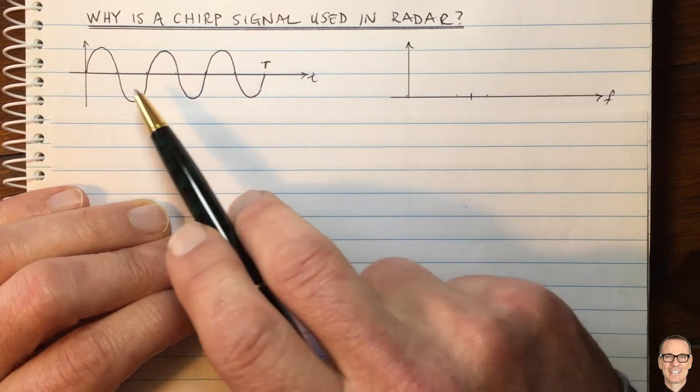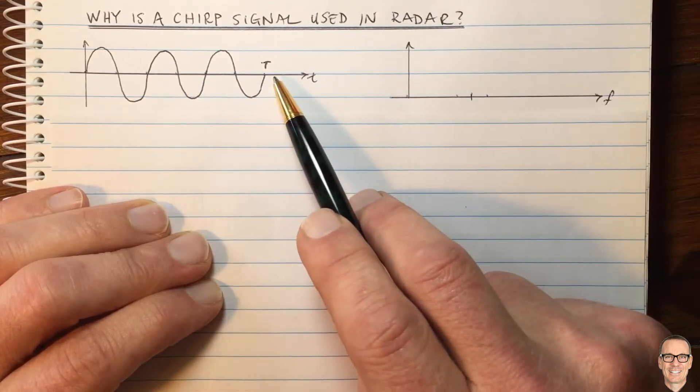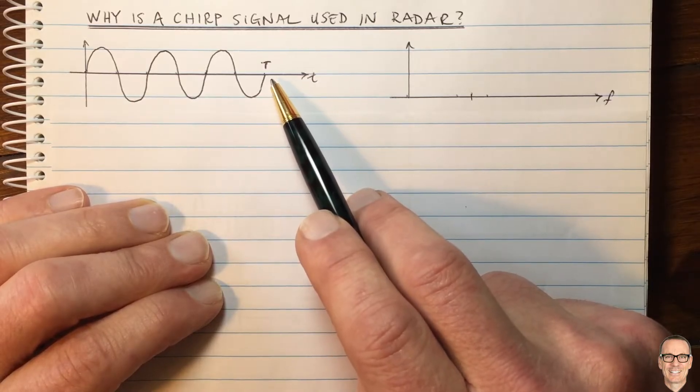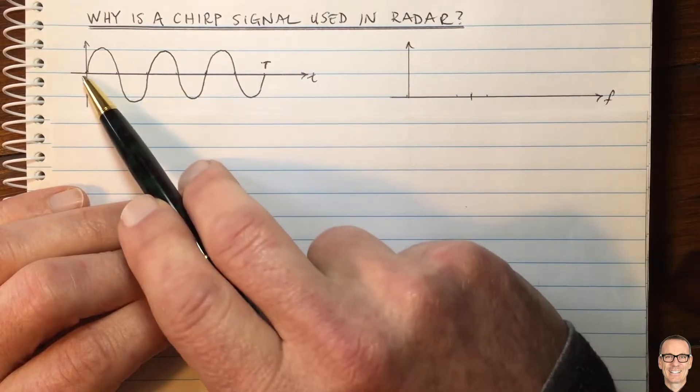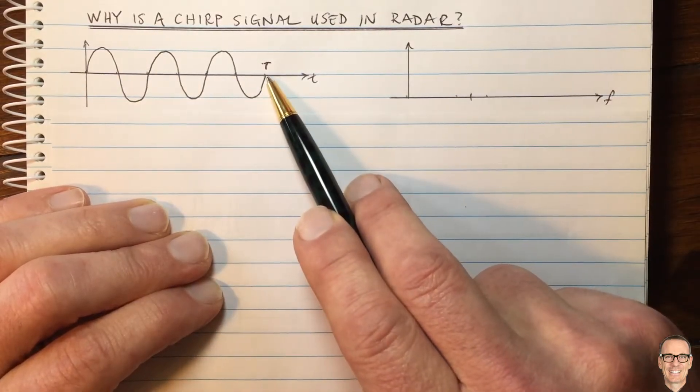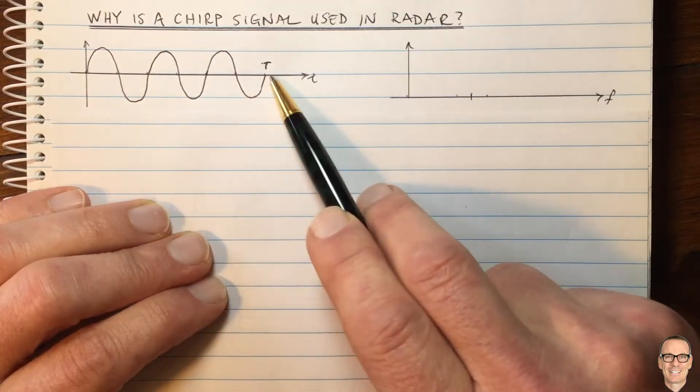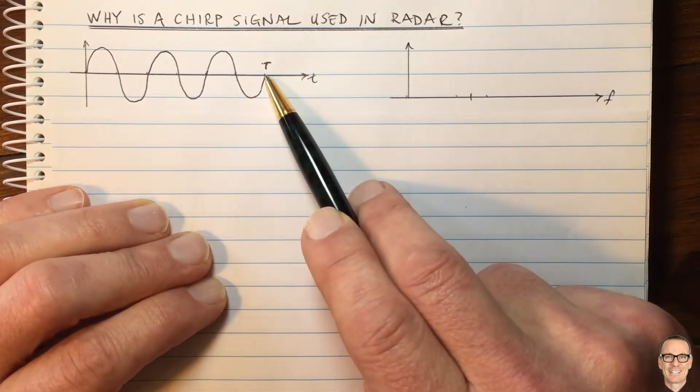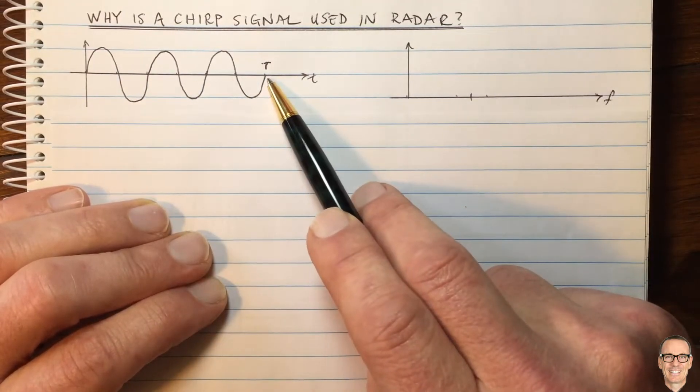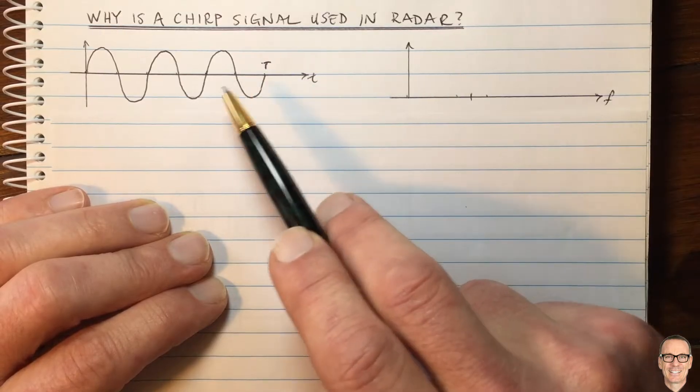It's also difficult if there is a distributed target with a number of reflection points off the target, so not just one reflection point. And also, if you're sending over this period of time, if there are multiple targets that are close together, then they can have multiple received waveforms that are all overlapping. And that is going to be difficult to separate.